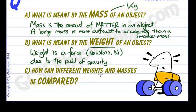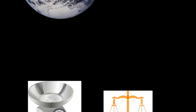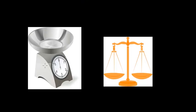How can different weights and masses be compared? Well, there are a number of different ways, but the easiest way of comparing masses is to measure their weight. So if you stuck a mass into a top pan balance—here we are, top pan spring balance, spring balance...